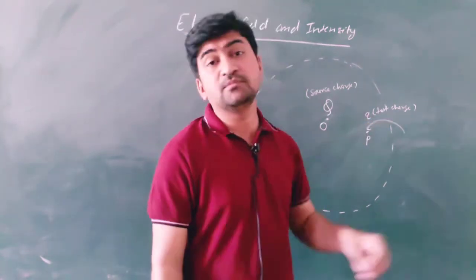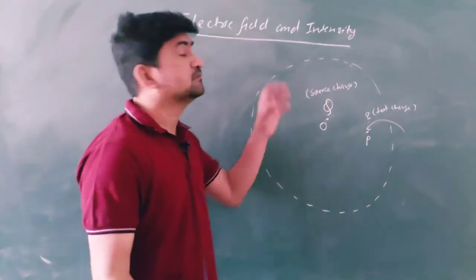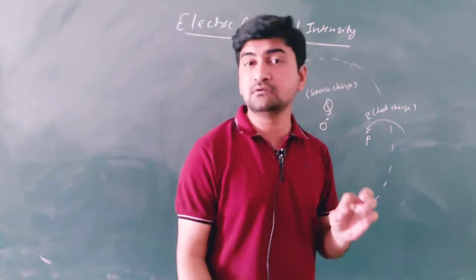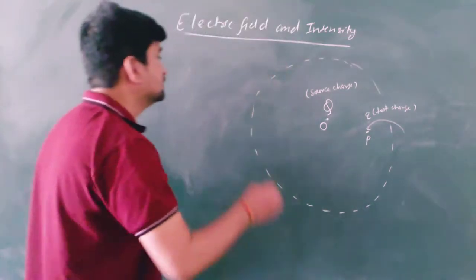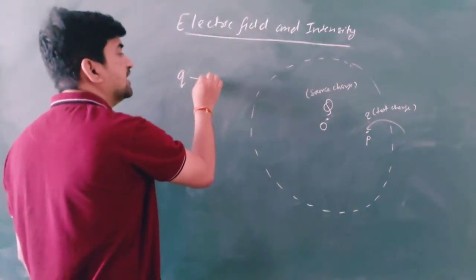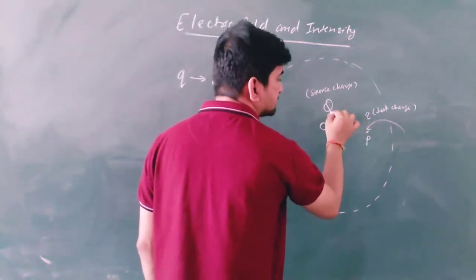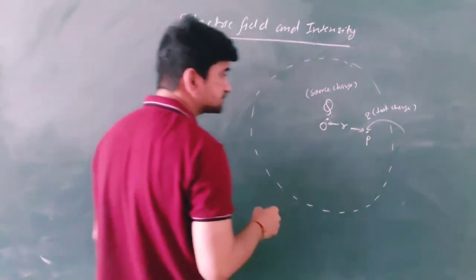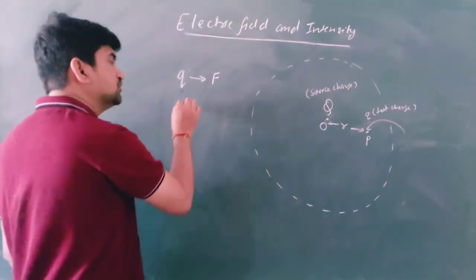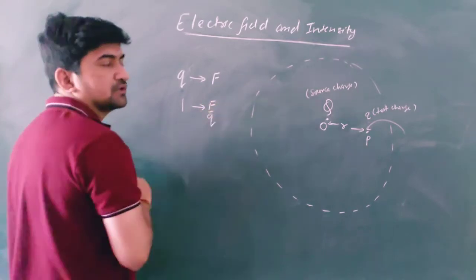So this test charge is what we call the unit positive test charge, used for determining the value of electrical intensity at any point in the electric field. So if Q charge feels force F at point P, which is at distance R from the source, then the unit charge will feel force F divided by Q.